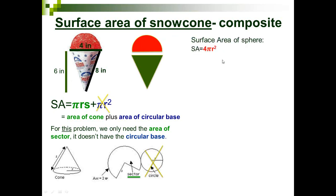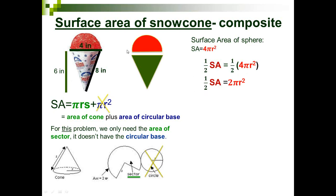For the top of the snow cone, we have half a sphere. The surface area of a full sphere is 4·pi·r². Since we only have half a sphere, we take half of 4·pi·r², and half of 4 is 2, so the surface area of the half sphere is 2·pi·r².